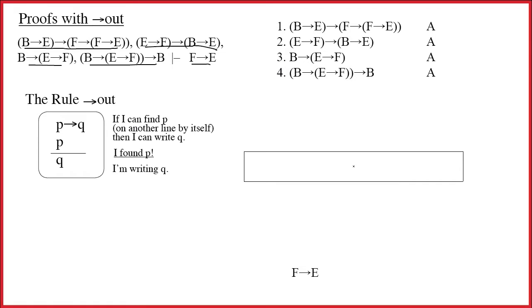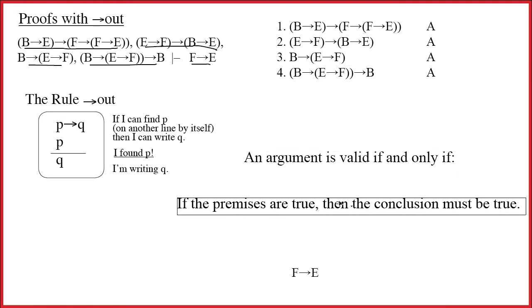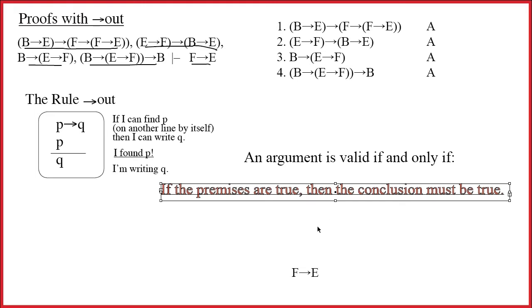Quick reminder about what it is that we're doing with the proof. We are, of course, proving that the argument is valid. And you know what this means because you know the definition of validity. The definition of validity says an argument is valid if and only if, and now comes your part. And hopefully you just said the following: if the premises are true, then the conclusion must be true.